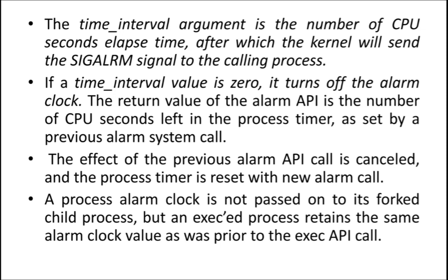The process alarm clock is not passed on to its forked child process. But an executed process retains the same alarm clock value as prior to the exec API system call. In simple words, whatever the process alarm clock value, it is not passed to the child process. The current alarm clock is only related to the particular parent process — the child process won't be affected by this. The parent process is not going to pass that alarm clock value to its child process.